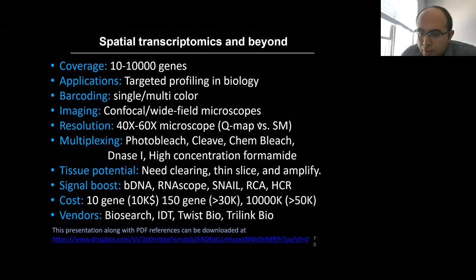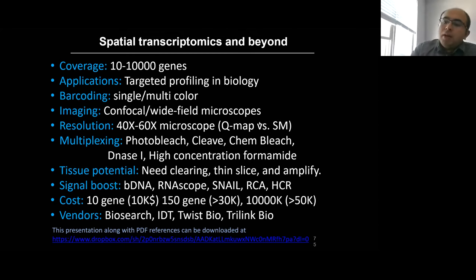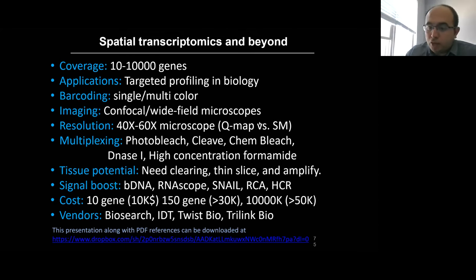Other limitations include the need for specialized microscopes and custom-written algorithms — more technically challenging. For copy number, even a few copies per cell can be detected — down to 3 in T cells — and it goes up to thousands of copies for ribosomal proteins. The main limitation is aligning barcodes across the wide dynamic range of copy numbers.